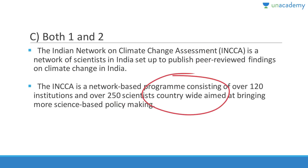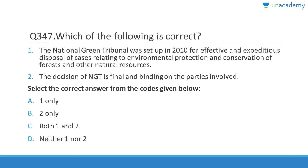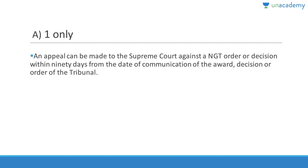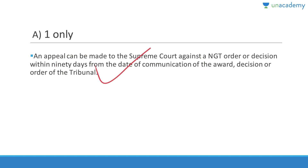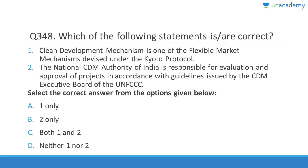Question 347: The National Green Tribunal (NGT) was set up in 2010 for effective and expeditious disposal of cases relating to environmental protection, conservation of forests and other natural resources — correct. However, NGT decisions are NOT final and binding; appeals can be made to the Supreme Court within 90 days from the date of communication of the award or decision. Answer is A (1 only).